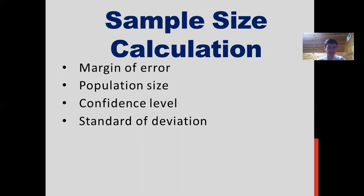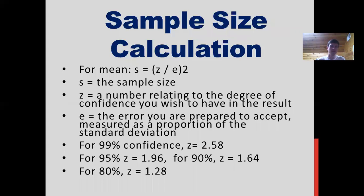Lastly, the standard of deviation is how much variance you expect in your responses. To determine your sample size, there's a general equation: S equals Z divided by E, squared — where S is the sample size, Z is the number relating to the degree of confidence you wish to have, and E is the error you're prepared to accept. Predetermined Z values are: 99% confidence → Z = 2.58; 95% → Z = 1.96; 90% → Z = 1.64; 80% → Z = 1.28.